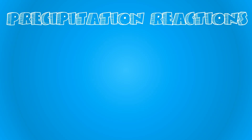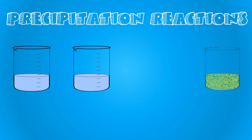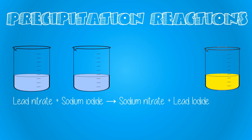It's important that we can represent precipitation reactions with word equations. The reactants — lead nitrate and sodium iodide — are placed on the left-hand side of the arrow. The products — sodium nitrate and lead iodide — are placed on the right-hand side. It's important that we include the states of matter to show when a precipitate has been made.